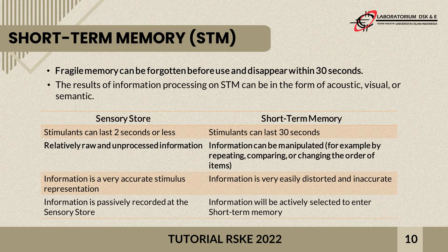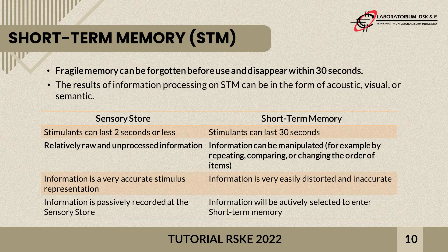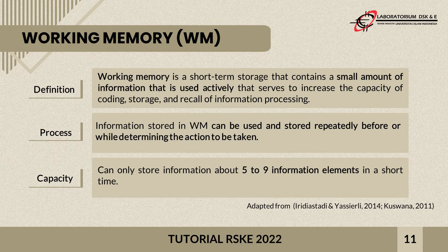Short-term memory is divided into two stages. The first is sensory store, which is a large-capacity storage system that records information from the senses accurately. For example, when you open a website to find the McDonald's delivery number and you see a series of numbers on the interface, the moment you realize those are numbers — that is the sensory store. When you then recognize the specific number, such as 4510, as the McDonald's delivery number, that is short-term memory.